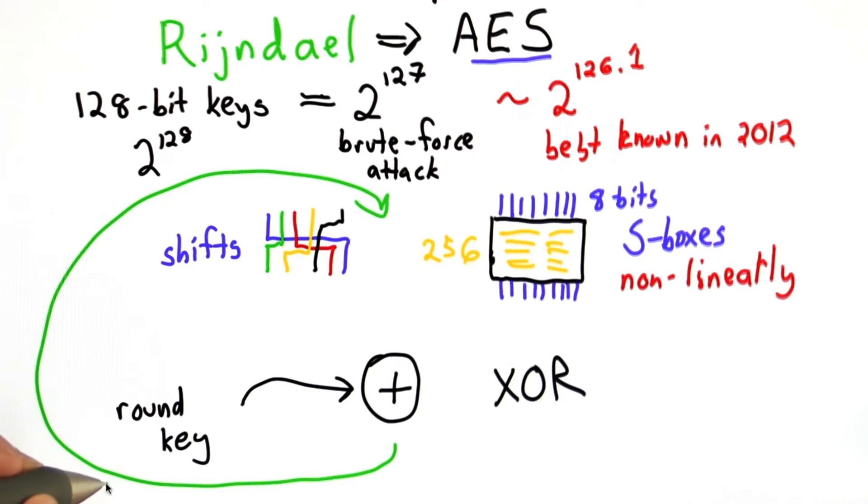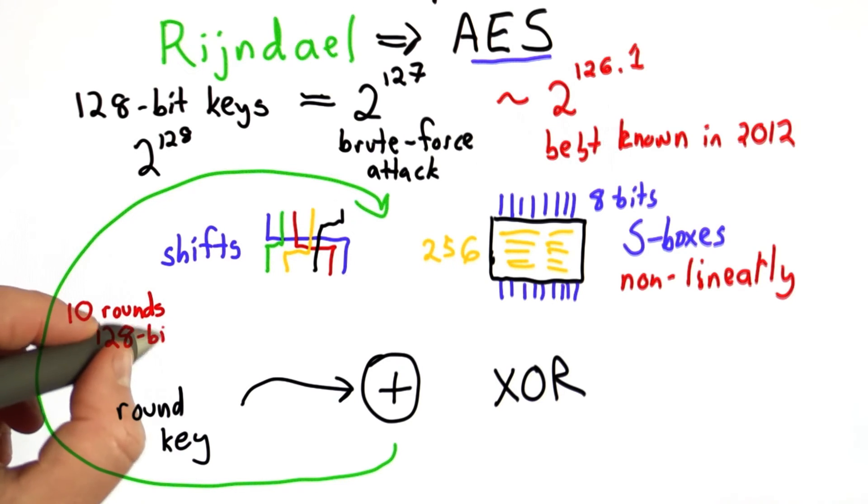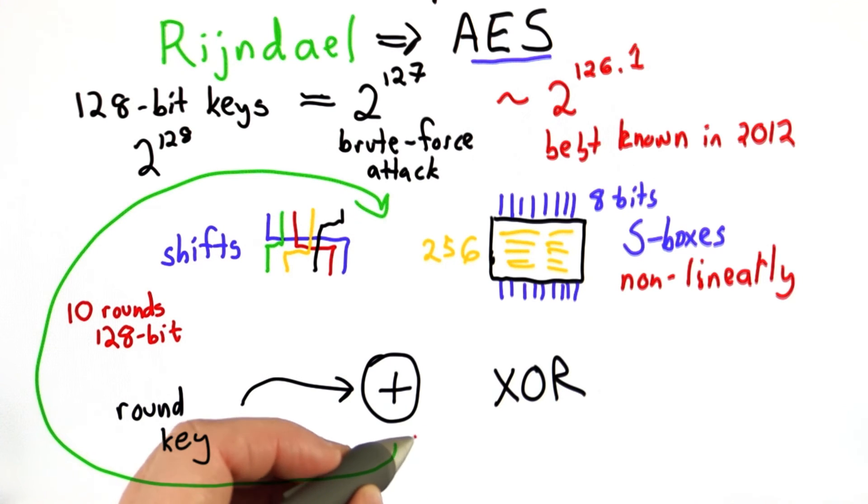And the number of rounds depends on the key size. So for the smallest key, for the 128-bit key, which is the smallest key size for AES, we would do 10 rounds going through this cycle, getting the output ciphertext for that block.